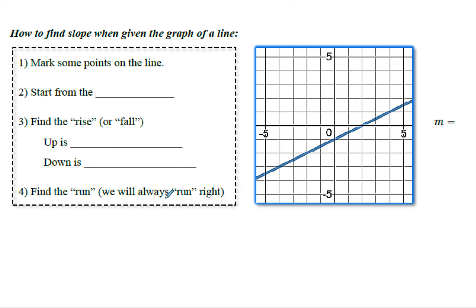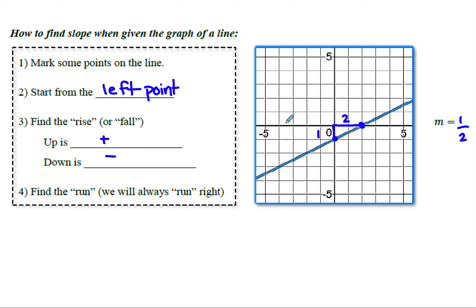To find slope from a graph, mark two points where the line exactly passes through intersections. Start from the left point and find the rise or fall — up is positive, down is negative. When finding the run, always go to the right. Here we go up one and over two, giving a slope of positive one-half. Note: you can only count units if the graph goes by ones. If it doesn't go by ones, you'll need to use subtraction to find your rise and run.